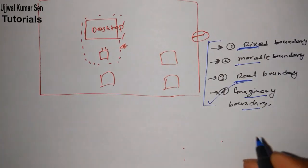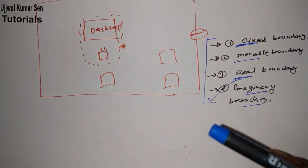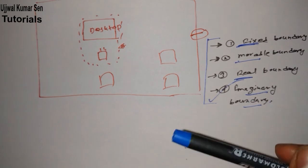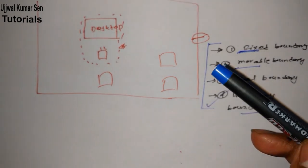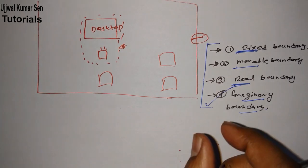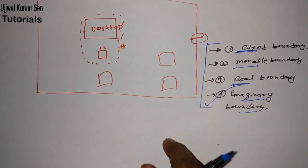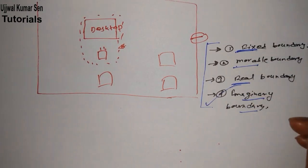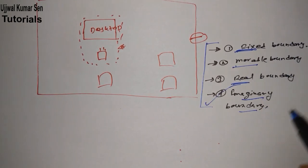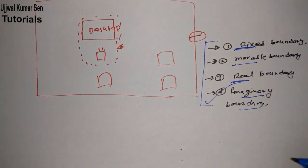The key point I have shared is that the boundary depends on the system you are in. That's why the surrounding also depends on the system you are in. Based on what system you are considering, you will have a corresponding boundary and surrounding. If you have an imaginary boundary, the surrounding will change accordingly; if you have a fixed or movable boundary, the surrounding changes too. Real boundary can be fixed or movable; imaginary boundary is different from both.